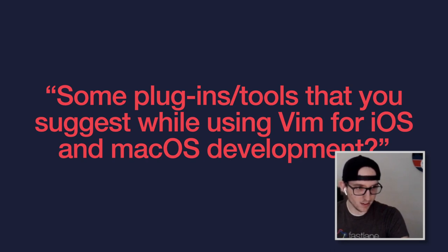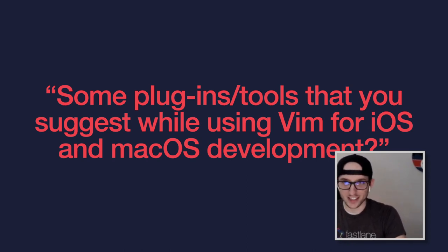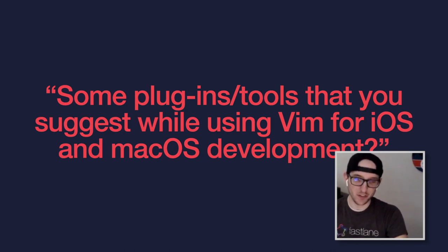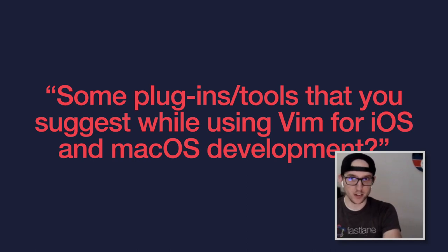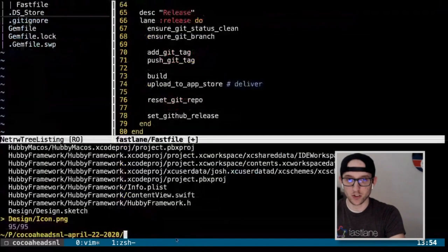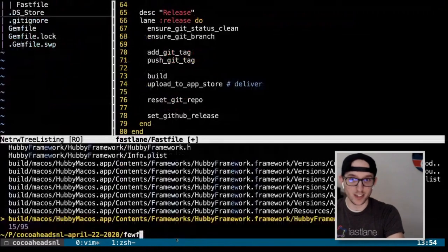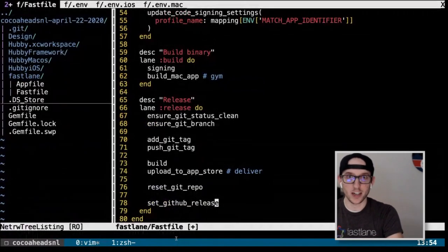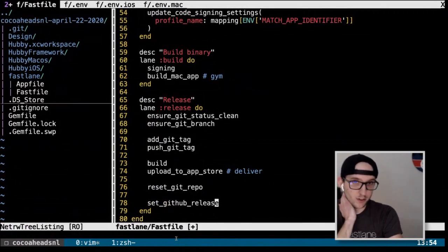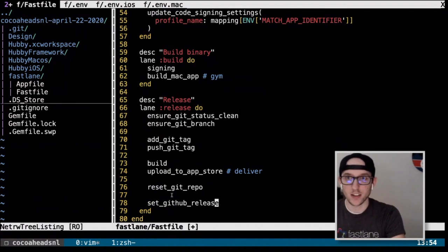Suggested Vim plugins for iOS and macOS development: I actually don't do iOS or macOS development directly in Vim — I still use Xcode. All my other development I do in Vim. My favorite plugin involves AG/Silver Surfer. I use Control-P to search for file names and Control-T for a fuzzy search over the whole repo. That's pretty much the only plugin I use. The biggest command-line tool I use is tmux — I can't not use tmux.